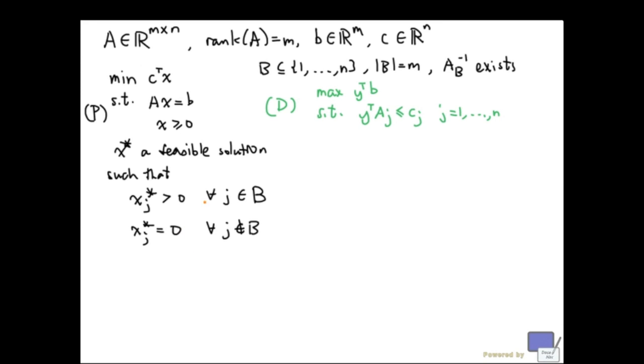In the previous video, we saw how we can tell whether or not x star is optimal. x star is optimal if and only if there is a feasible solution y star to the dual such that x star and y star satisfy the complementary slackness conditions.